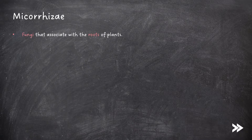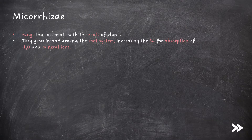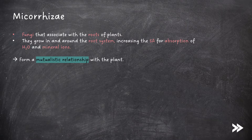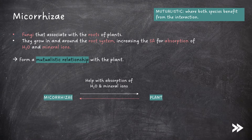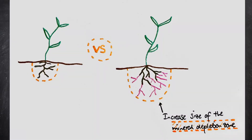We also need to know about mycorrhizae, which are fungi that associate with the roots of plants. They're a bit like extensions to the roots, like extending fingers. They grow in and around the root system, increasing the surface area for the absorption of water and mineral ions. Mycorrhizae form a mutualistic relationship with a plant — a mutualistic relationship is one where both species benefit from the interaction. The mycorrhizae help the plant by increasing the surface area for absorption of water and mineral ions, and in exchange receive sugars such as glucose from the plant. You can see on the diagram that the plant with mycorrhizae has a much bigger surface area covered — you could say the mycorrhizae increased the size of the mineral depletion zone.